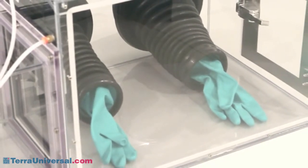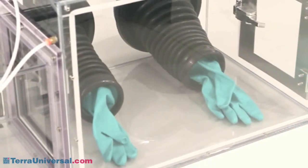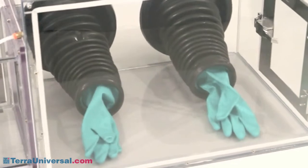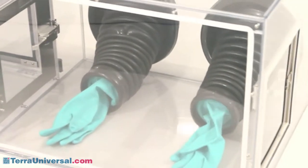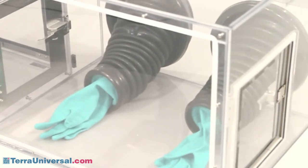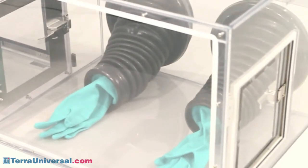We've mounted Terra's accordion sleeve and glove combination on this unit. The accordion sleeve design resists blowback when the glove box is pressurized, and the two-piece design lets you replace gloves frequently without having to change the sleeve, another cost saving.